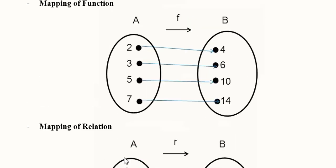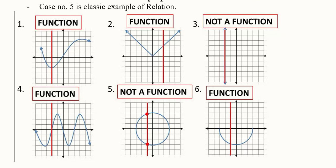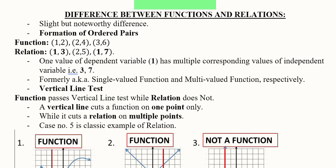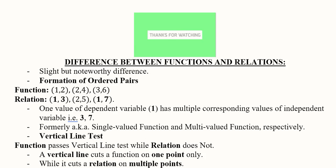In this way the difference between a function and a relation is depicted with the help of mapping, a Cartesian coordinate graph, and numerical instances. This is how we understand the difference between functions and relations. Thank you.